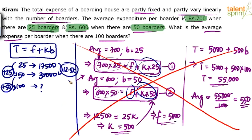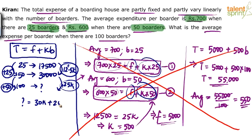For 25 more people the variable increment is 12,500. From 50 to 100, there are 50 more people joining — double the number. So the increment will be double: 25,000. The total for 100 people will be 30,000 + 25,000 = 55,000.